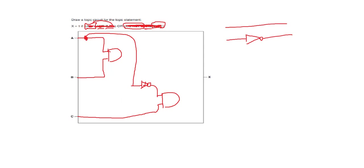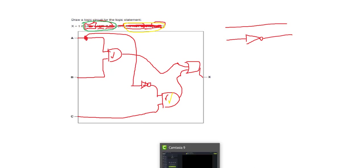That leaves us with the AND gate for the first bracket and the AND gate for the second bracket, both unconnected to an output. The first bracket feeds into the OR gate, the second bracket also feeds into the OR gate, and we join them together using an OR gate to get the final output. That is full marks.